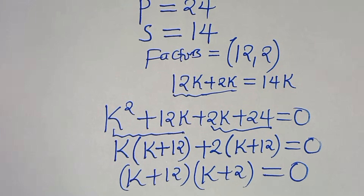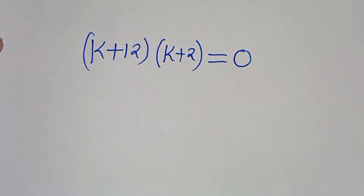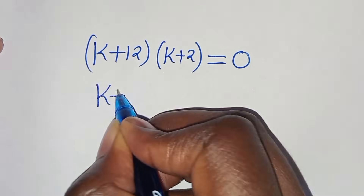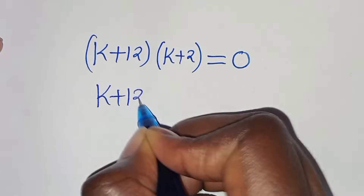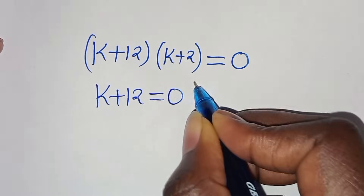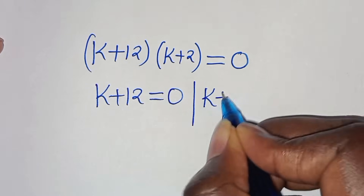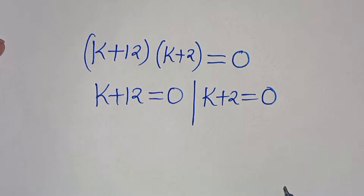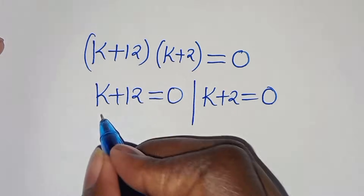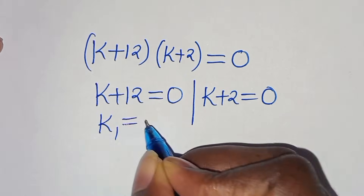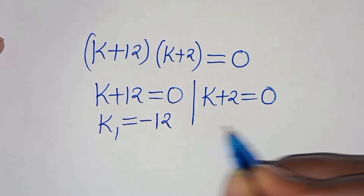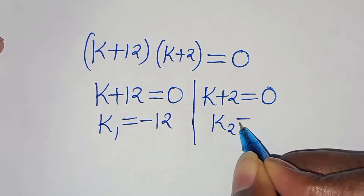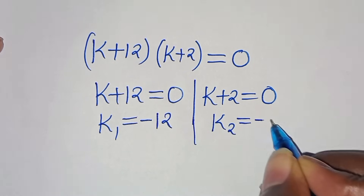This is equal to zero, and we have k plus 2 equals zero. So k₁ is equal to minus 12 and k₂ is equal to minus 2.